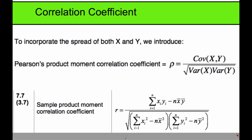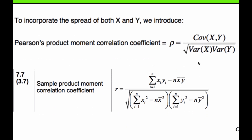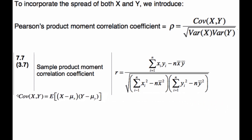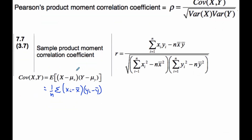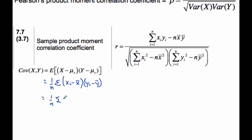In order to show they're equivalent, we need to do a little computation. Recall from the last video: the covariance equals the expectation of (x minus mu_x) times (y minus mu_y), which is the same as 1/n times the sum of (x_i minus x-bar) times (y_i minus y-bar). If we multiply this out, we get the sum of x_i*y_i minus x-bar*y_i minus y-bar*x_i plus x-bar*y-bar.